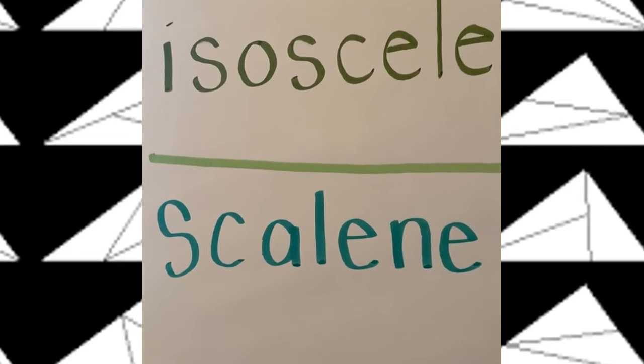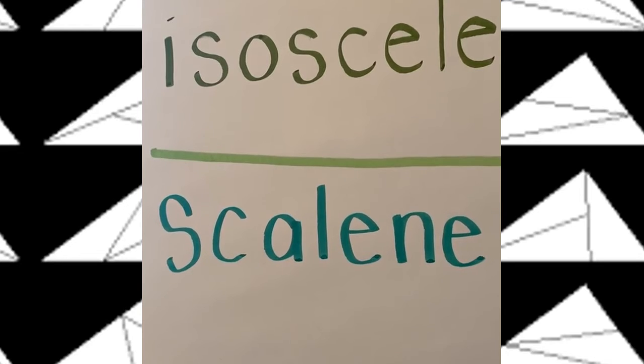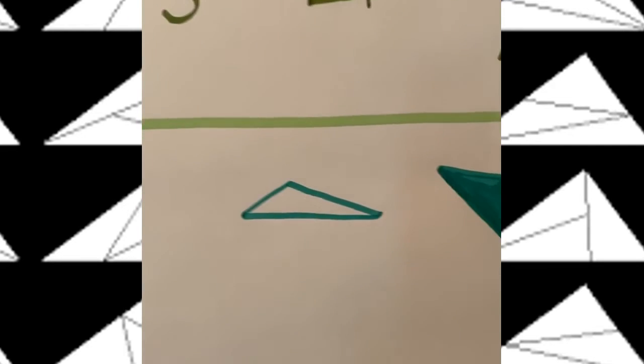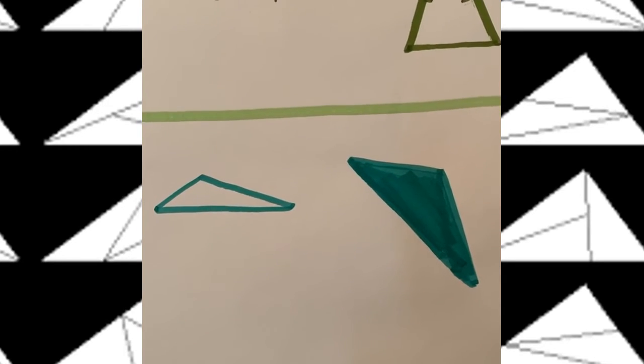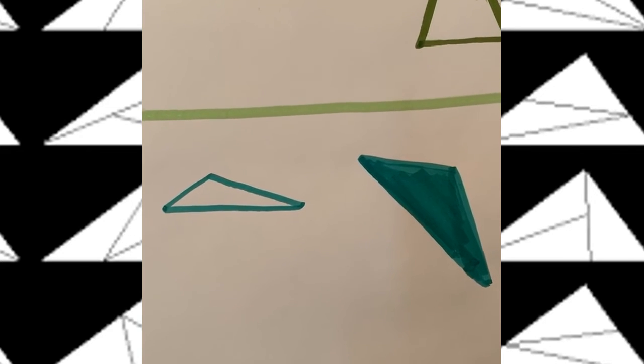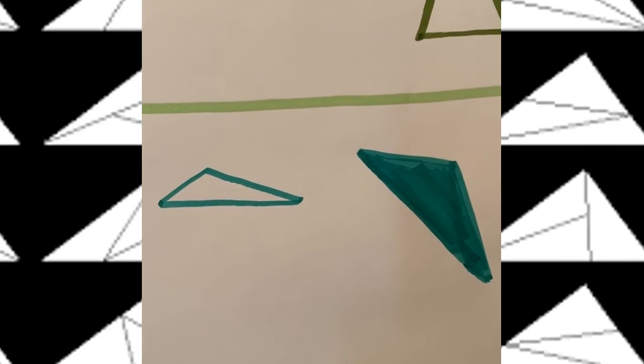Okay, here is the word scalene, and what scalene means is that there are no equal sides. So these triangles will have different side lengths for each of the three sides, so they are not equal. So you won't see any of those little dashes because they are all different lengths.